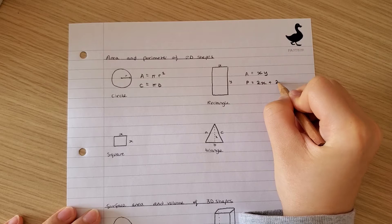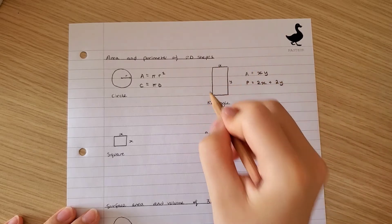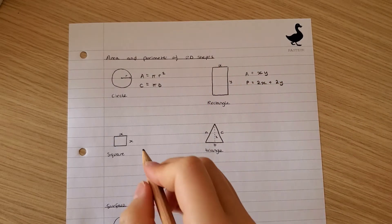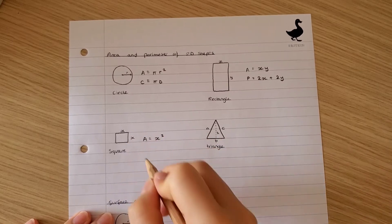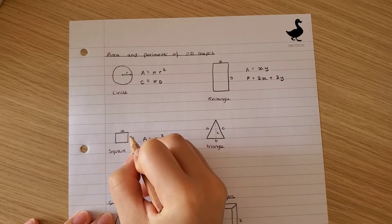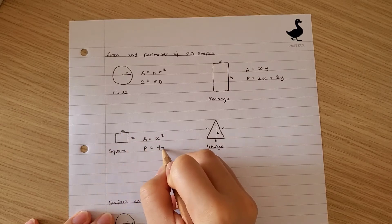For the square, the area is x squared. The perimeter, 1 2 3 4, is 4x.